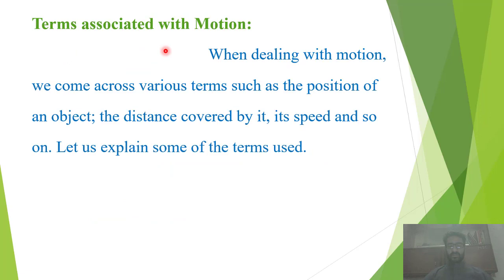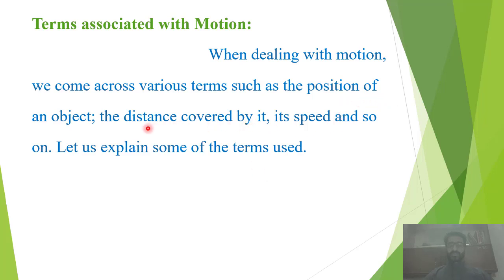Terms associated with motion: When dealing with motion, we come across various terms such as the position of an object, the distance covered by it, its speed, and so on. Let us explain some of these terms. جب بھی کوئی body motion میں ہوتی ہے یا وہ move کر رہی ہوتی ہے تو اس کی position بھی change ہوتی ہے، وہ کچھ distance بھی cover کرتی ہے اور اس کی کچھ speed بھی ہوتی ہے۔ تو ان تمام terms کو ہم next describe کریں گے۔